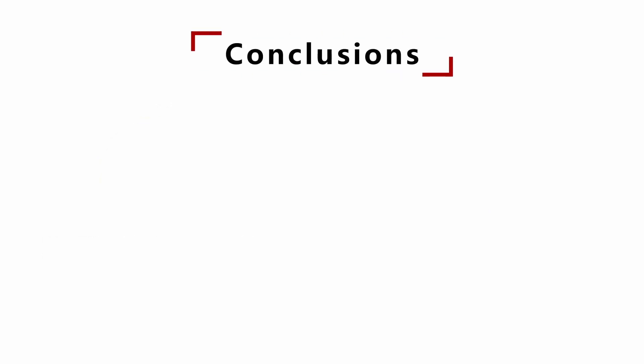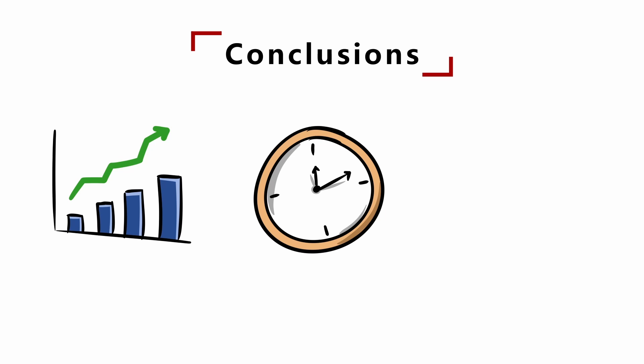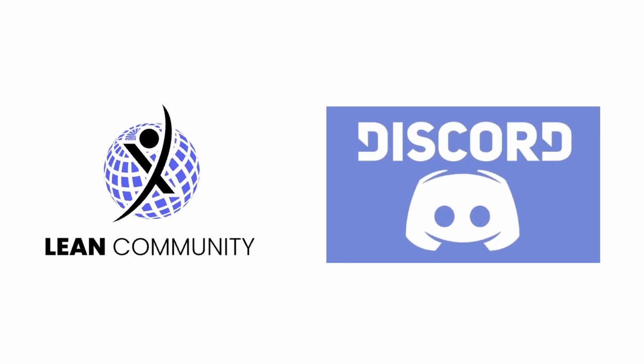Conclusions: TPM is a program created to maximize the production capacity of machines. TPM needs method, time, and adequate resources to be effective. It is proven that the investment made in a serious TPM program has an economic return for companies. If you want to know more, you can find TPM experts on the Lean Community Discord server — find the link in the description.